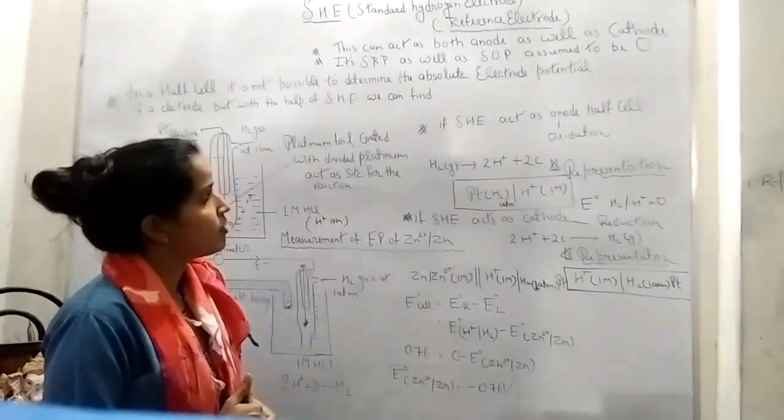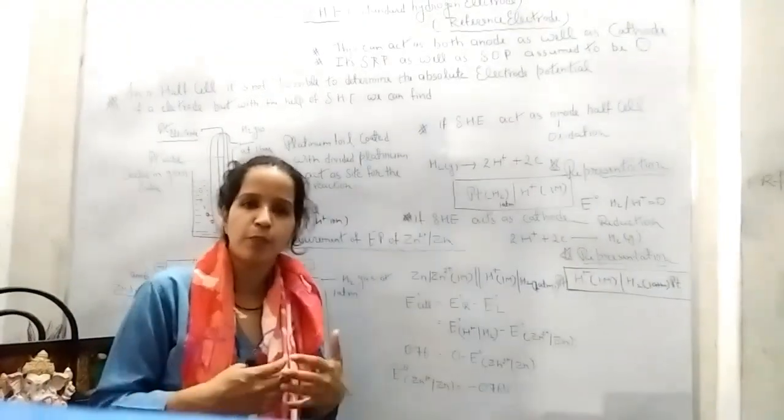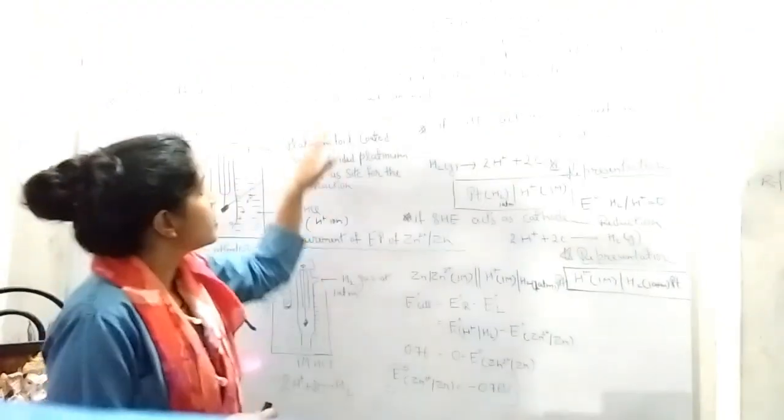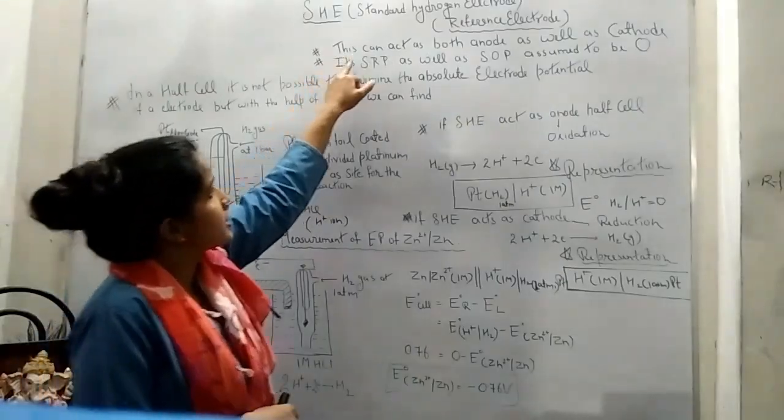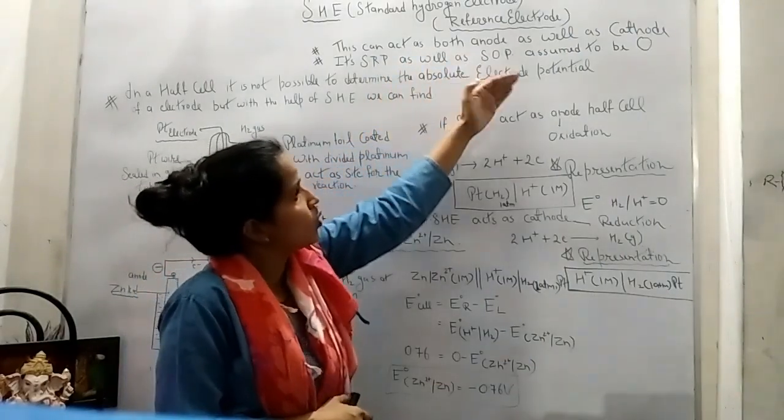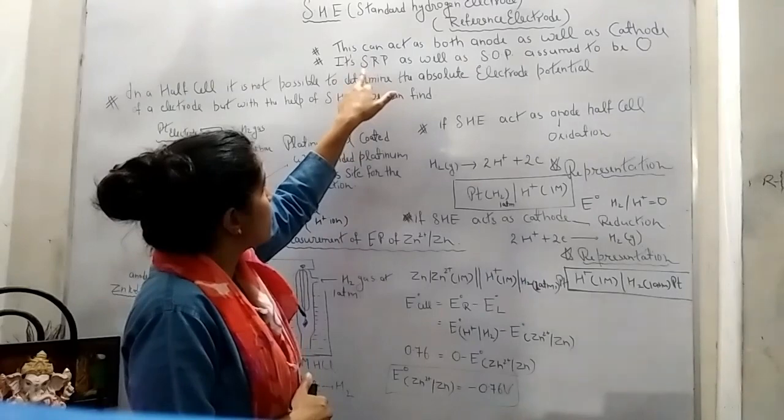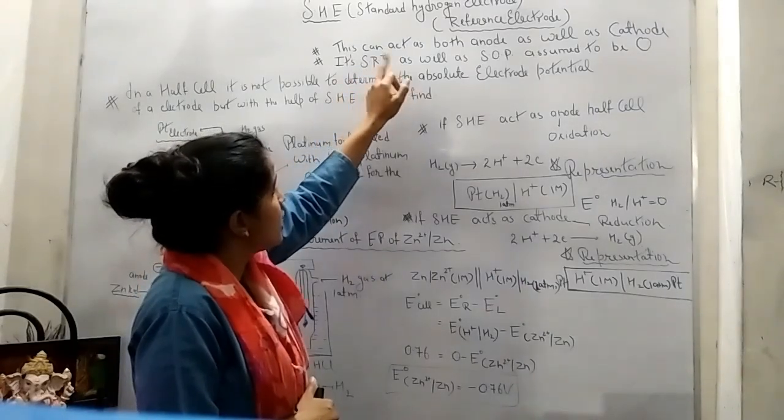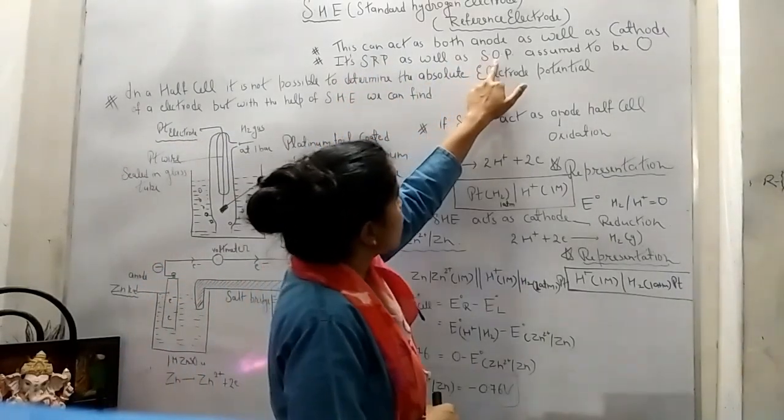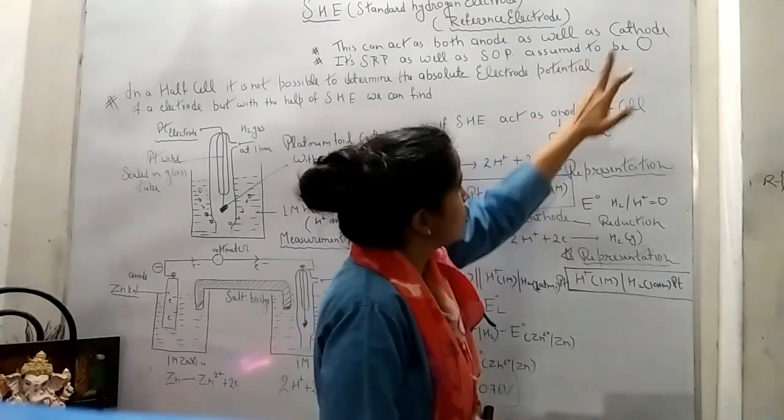With the help of SHE we will determine the standard electrode potential. The advantage of this is that it can react as both anode as well as cathode. And second point, its SRP means standard reduction potential as well as standard oxidation potential is assumed to be zero.